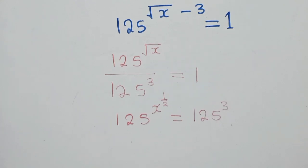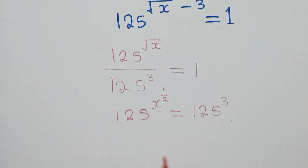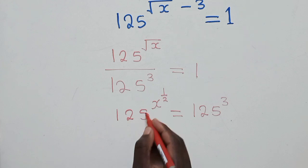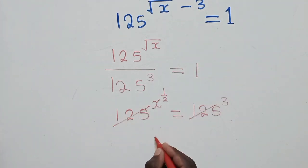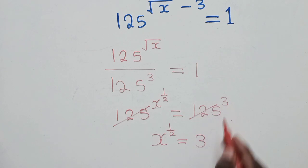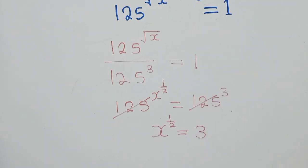So thereafter, we just say x. The laws of indices here, so we shall say the bases are the same here and here. So we cancel them, we go to the powers. x power 1 over 2 is equal to 3. This power is equal to the power which is right here.